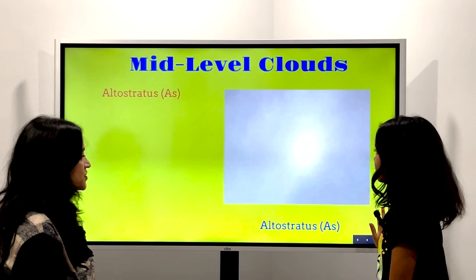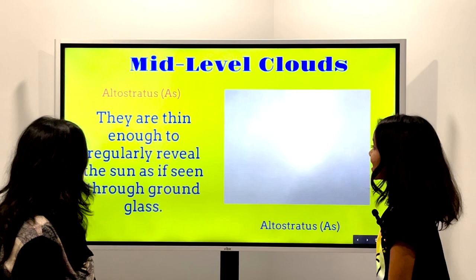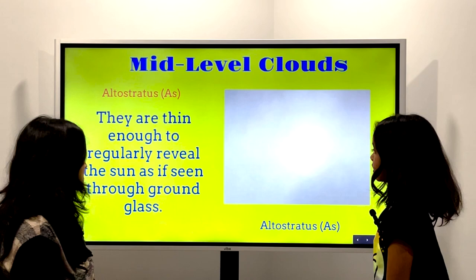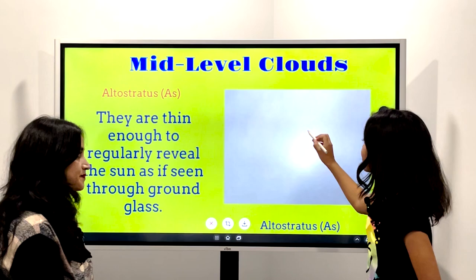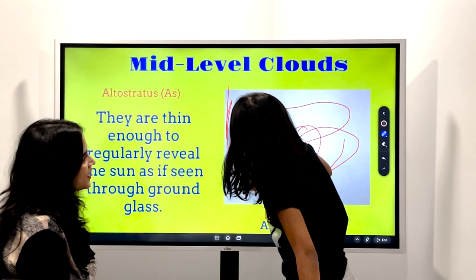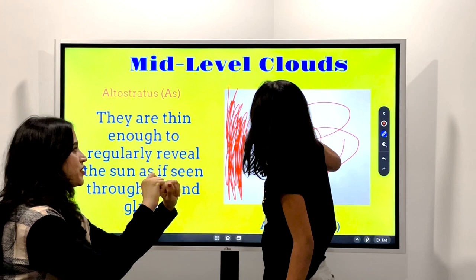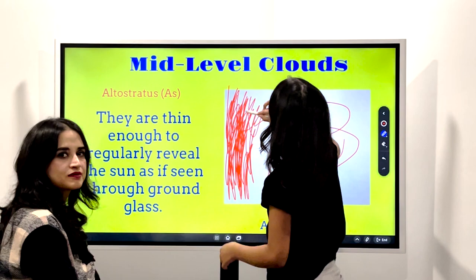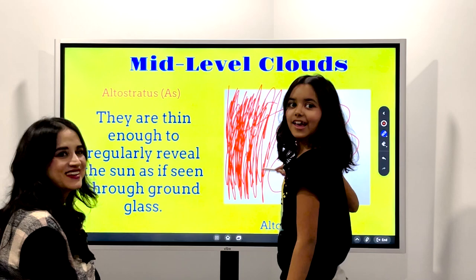Altostratus. That's a cloud. They are thin enough to regularly reveal the sun as if seen through frosted glass. This is actually the sun — it's like fog inside because you can't see anything clearly. It's kind of like a white scarf wrapped around the sky. Nice — I just gotta finish drawing this.